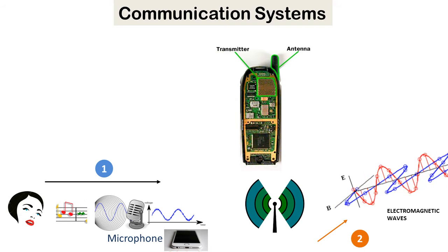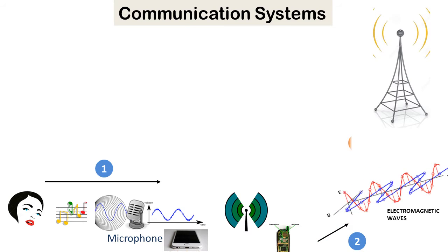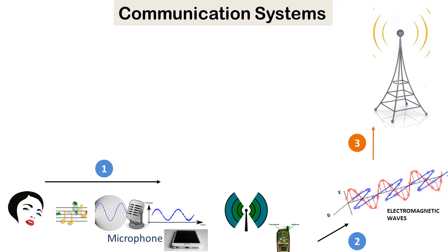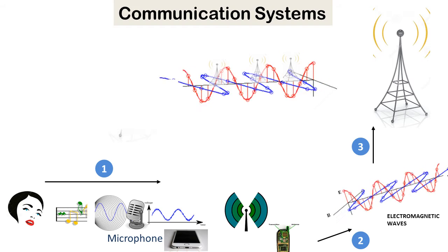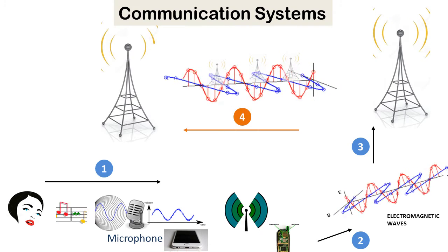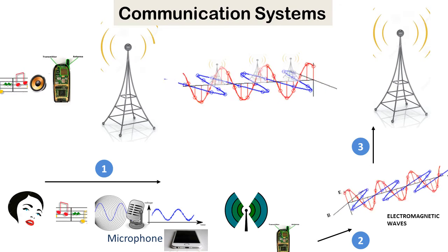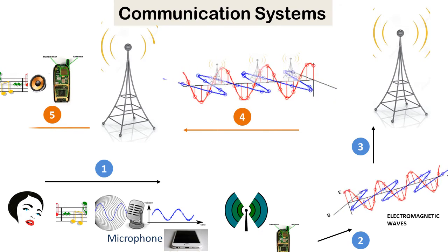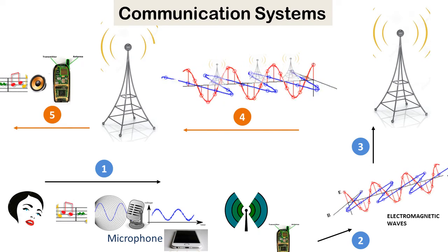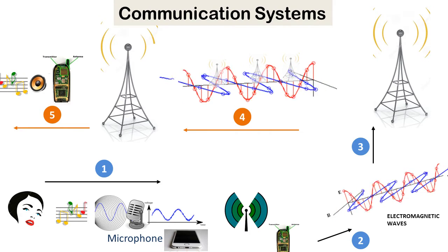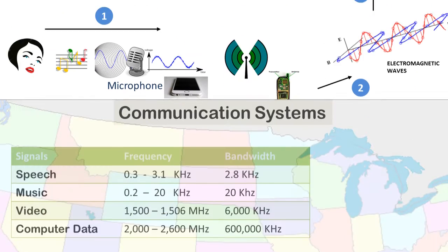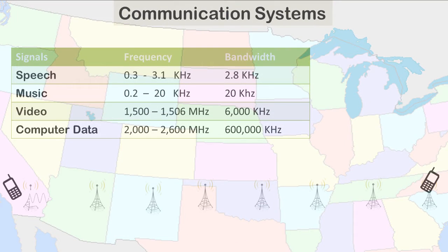The electrical signal then goes through the transmitter, which transmits it as electromagnetic waves. These waves are received by a nearby communication tower, which strengthens and further transmits the signal. These transmitted waves hop through multiple communication towers, and the signal is then received by the recipient cell phone.